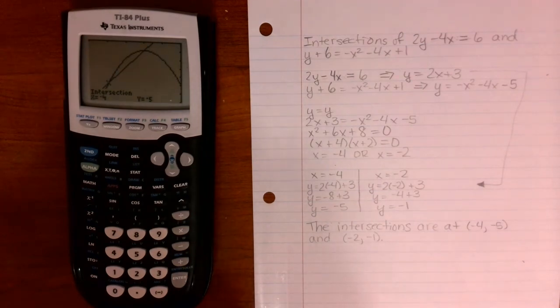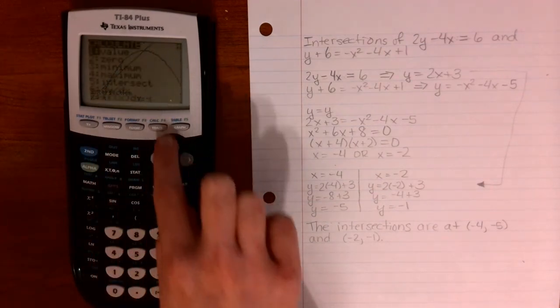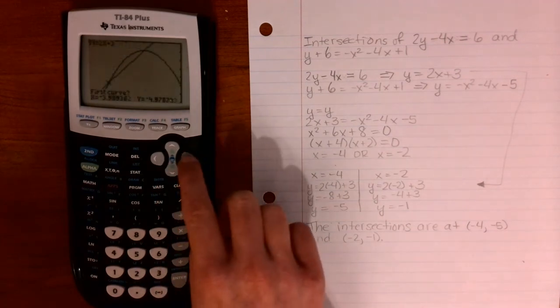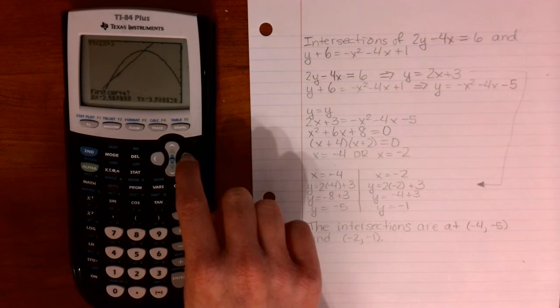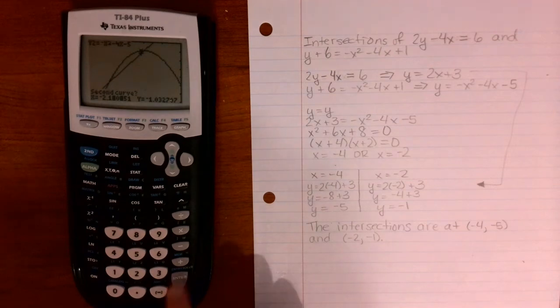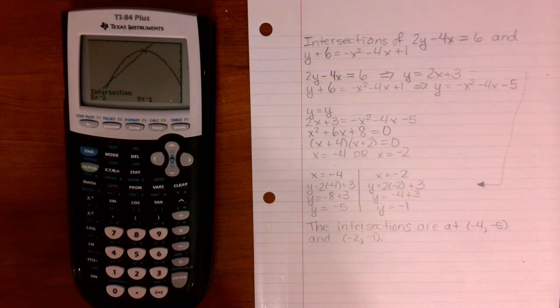Now for the upper intersection, press second calc, go down to intersect. And now let's go closer to the next intersection we want to find. Press enter when you get close enough to it. And then press enter again when you are close enough to it for the second function. Press again for guess, and it's found that the next intersection is at negative 2 comma negative 1.